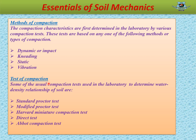Test of compaction: Proctor showed that there exists a definite relationship between the soil water content and degree of dry density to which a soil might be compacted, and that for a specific amount of compaction energy applied on the soil, there was a water content termed as optimum water content at which a particular soil attained maximum density. Some of the usual compaction tests used in the laboratory to determine the water-density relationship of soil are: standard Proctor test, modified Proctor test, Harvard miniature compaction test, direct test, and proctor compaction test.